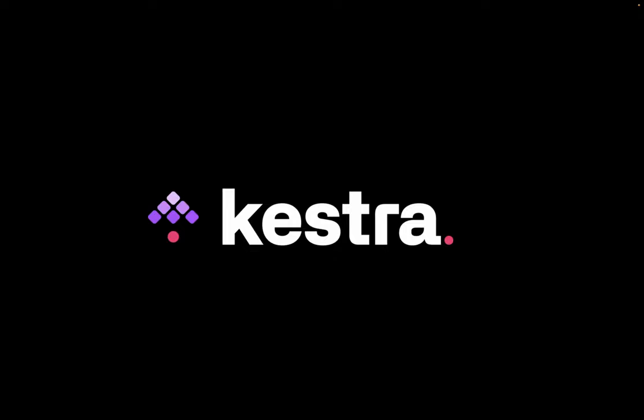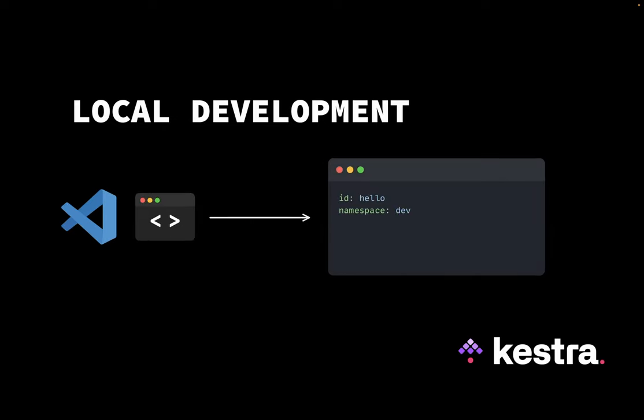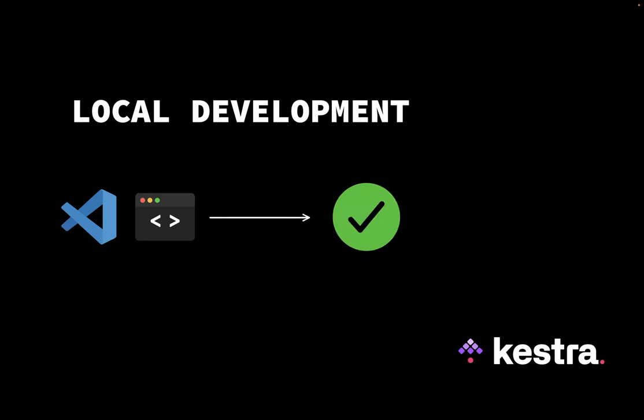Building data workflows requires iteration. You typically start in a local development environment using your favorite code editor and a command line interface. You write your data pipeline and configure all your tasks and dependencies. Then you run it locally and validate that your code is working as intended and your data looks good.